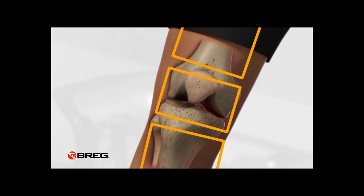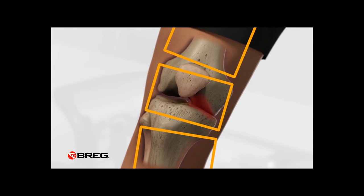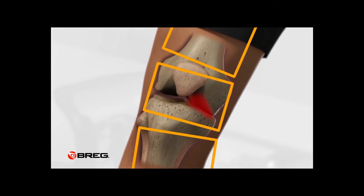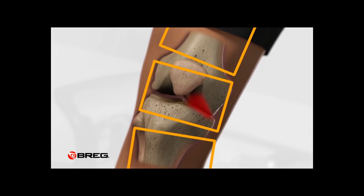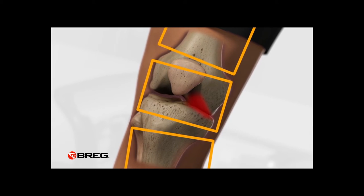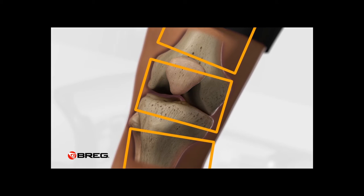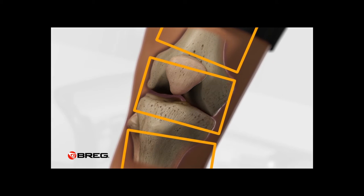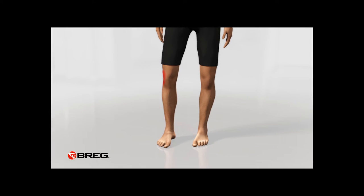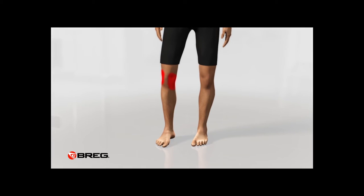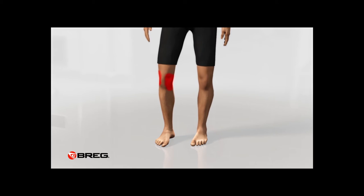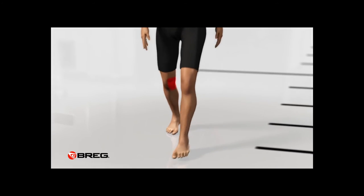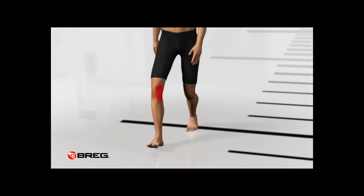In an OA knee, the narrowed space and pain associated with the disease can often lead to an abnormal gait, which can throw off this natural alignment. The resulting misalignment is often associated with OA. Although both the lateral (outside) or medial (inside) of the knee can be affected, the majority of people with OA have medial OA.